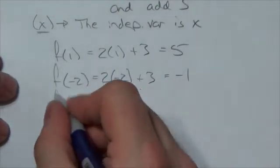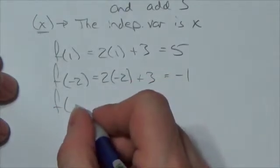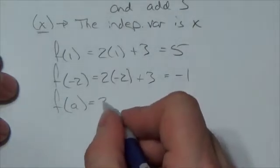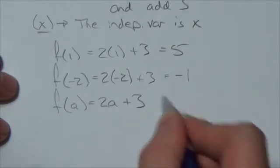Now, and then this can be used for other variables even. I can put in, for example, I can put a in there. Let's say that the independent variable is now going to be a. So this becomes 2 times a plus 3.